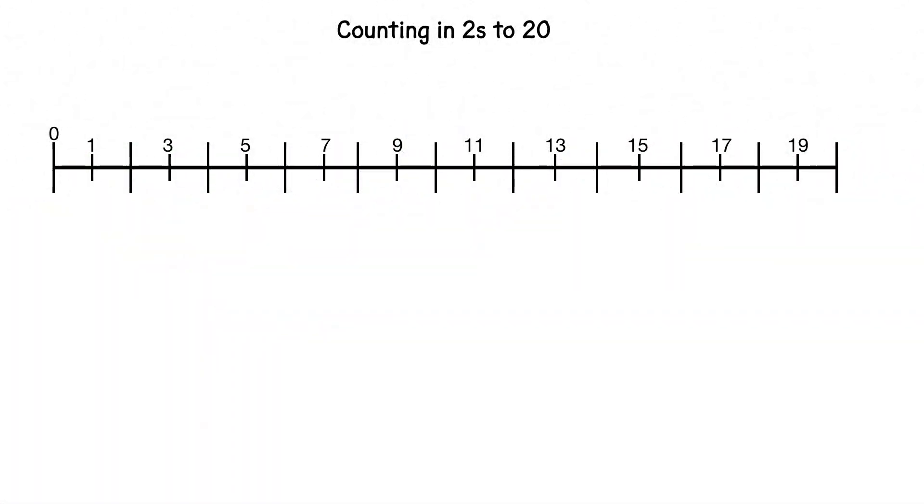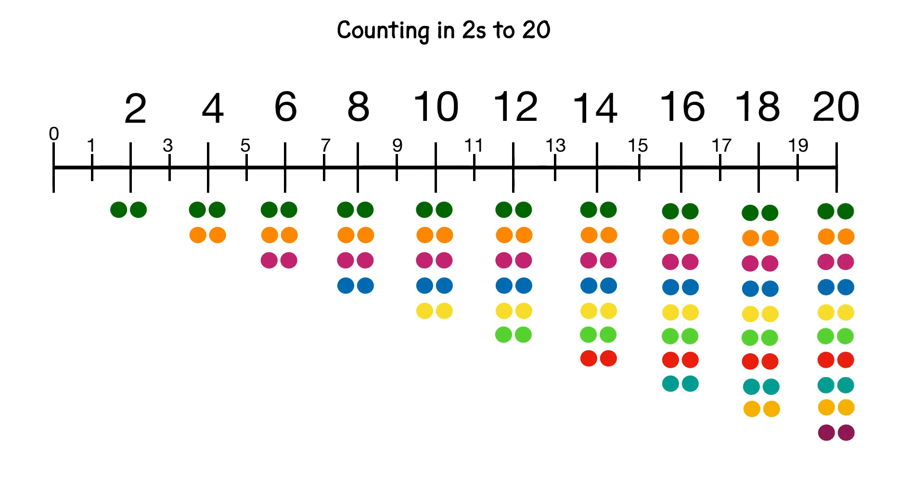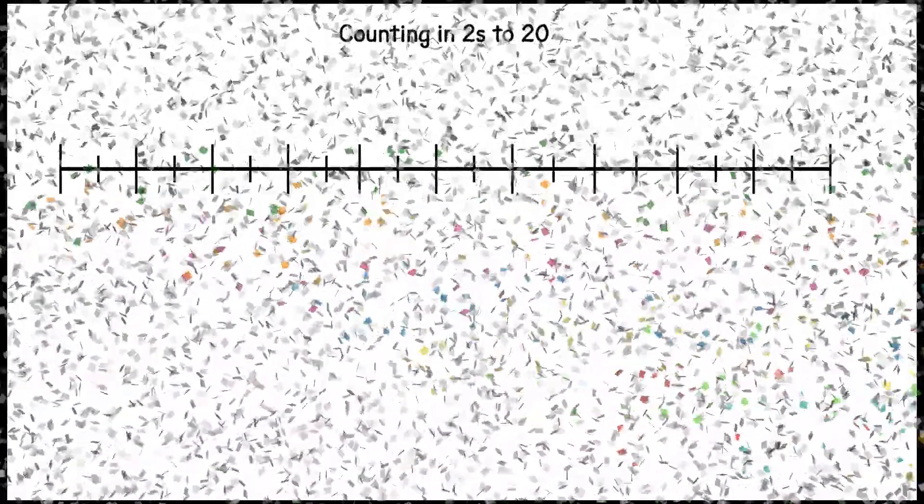Now let's count in twos again but without the grey numbers to help us. Two, four, six, eight, ten, twelve, fourteen, sixteen, eighteen, twenty. Well done.